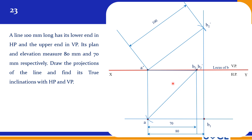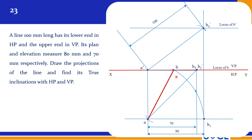Now, take A as center and A-B1 as radius; cut the arc. This will become your top view. Then with A dash as center and A dash-B2 dash as radius, rotate this arc until it touches the locus of B dash to get B dash. This is your B dash, and this is your front view line. This angle is your theta and this is your phi.